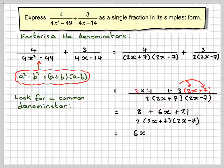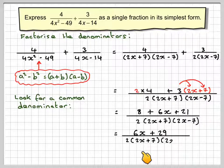So it's going to give me 6x, 8 plus 21 is plus 29, over 2 times 2x plus 7,